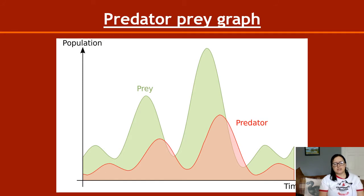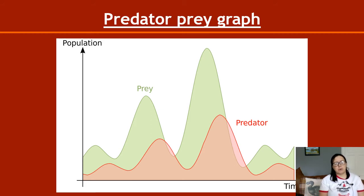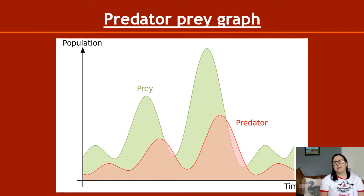This is an example of a predator-prey graph. When prey numbers go up, predator numbers go up, but not as much as prey. When prey numbers go down, predator numbers come down, but there is a slight time lag — prey goes up, and it's a little while after that predator numbers start to go up, because they need time to adjust to the more food being available. When prey numbers go down again, predator numbers go down because they need time to starve to death.